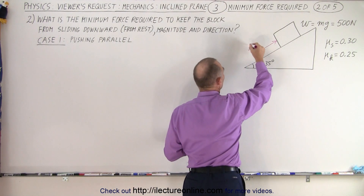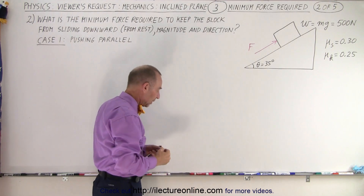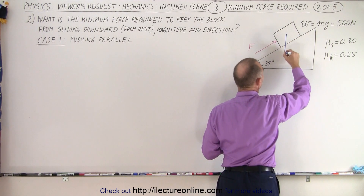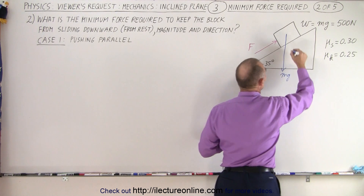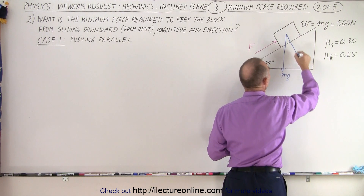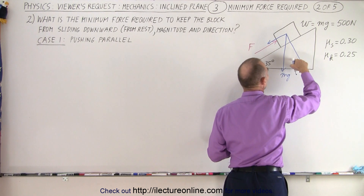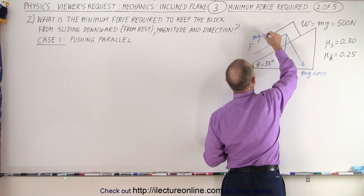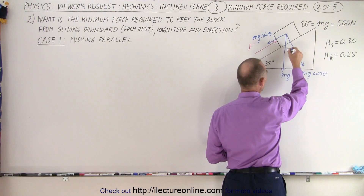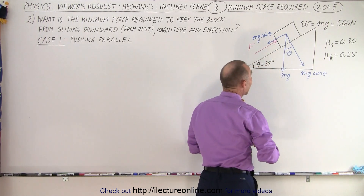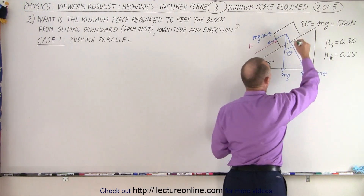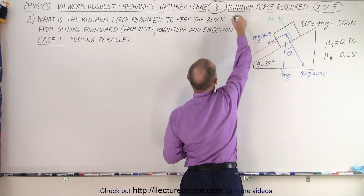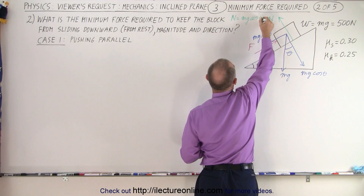We'll start with this case right here and see what happens as it develops. What we need to do is find all the forces related to what's happening on the block. We have the weight of the block that pushes it downward, which is mg. We then have the perpendicular component and the parallel component of that force. This would be mg cosine of theta, and this would be mg sine of theta — the same angle of 35 degrees. There would then be a perpendicular normal force pushing back.